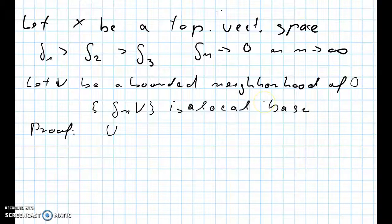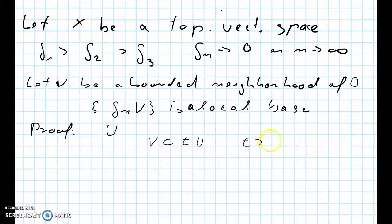Now since the neighborhood V is bounded by assumption, we can find a scalar s such that V is a subset of t times U for all scalars t greater than s.